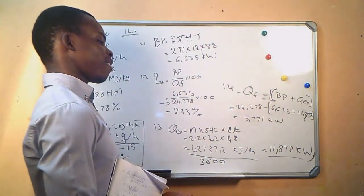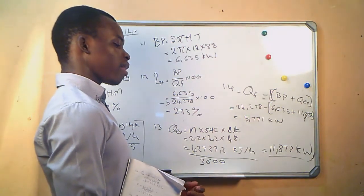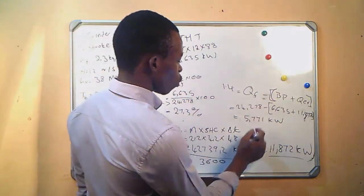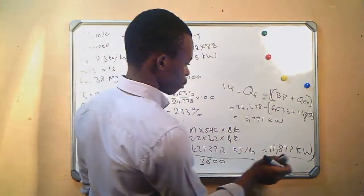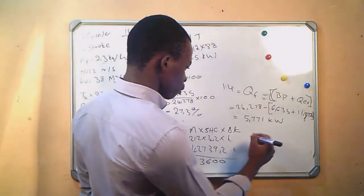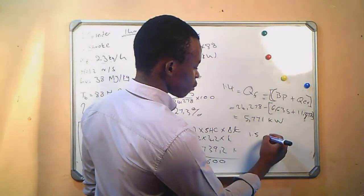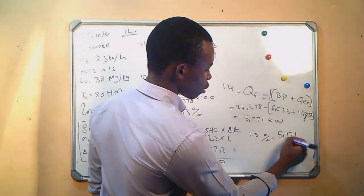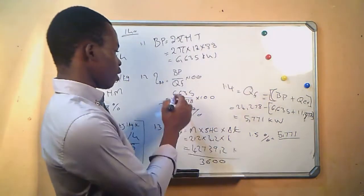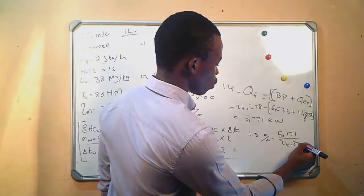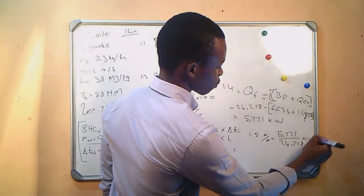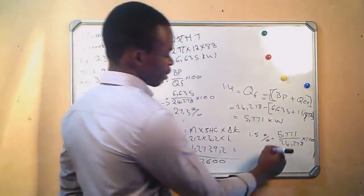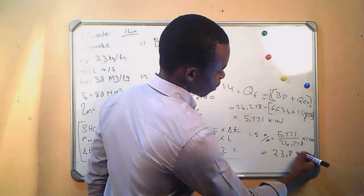Question 1.5: the percentage heat carried away by the combined effect of cooling water, friction and radiation. Percentage = (5.771 / 24.278) × 100 = 23.8%.